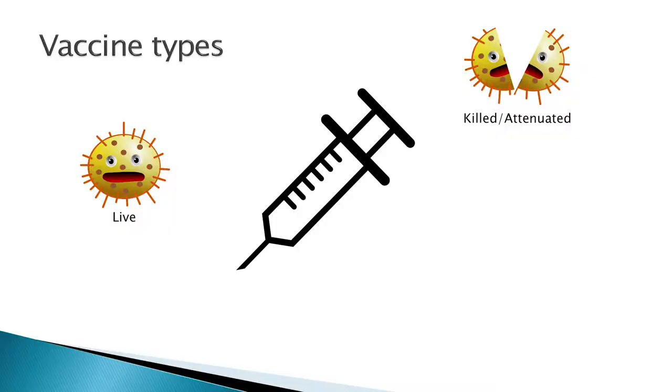We also use killed or attenuated vaccines, where the microbe has been killed or weakened in some way to reduce the risk of causing disease. However, both of these methods still use potentially infectious material — they're potentially allergenic. These risks are very, very low, but they do happen.